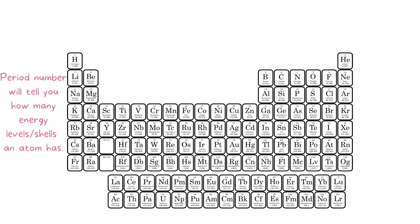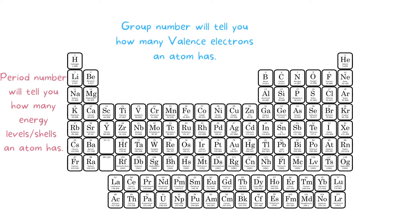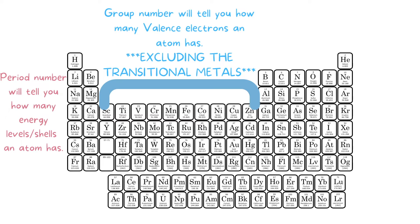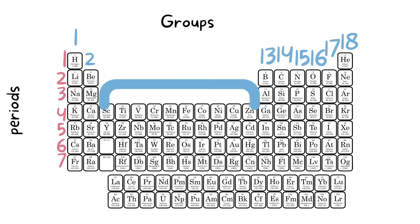So if we look at the periodic table we have two important parts here. First we have the period number, which is going to tell you how many energy levels or shells an atom has. Then we have the groups, which is going to tell you how many valence electrons an atom is going to have. Unfortunately this excludes the transitional metals, as the transitional metals are just not as predictable. Our periods are numbered 1 to 7 and the groups are numbered 1 to 18.